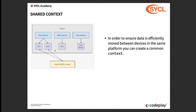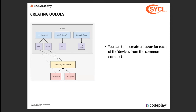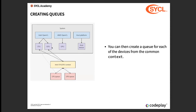In order to move data between devices, you can create a common context. The context constructor takes multiple devices, so you can create a context with multiple devices. When you do that, you will be able to transfer data between one of the two devices. And then you can reuse this context to create as many queues as you want from it. For example, we have a shared context using the CPU and GPU because they are both on the same platform. Then from this context, you create a queue targeting the CPU and a queue targeting the GPU, and it works out of the box.